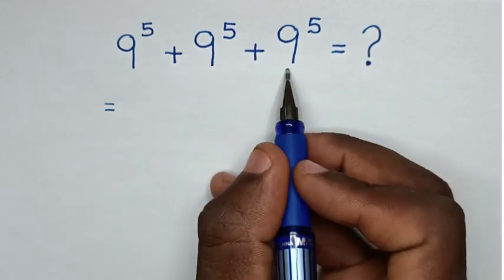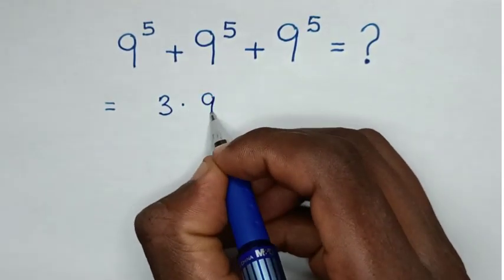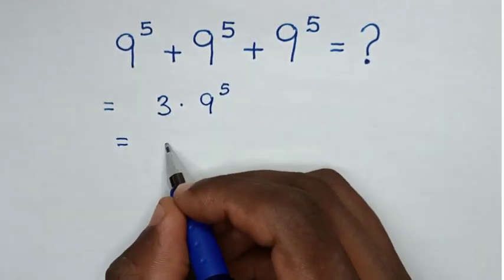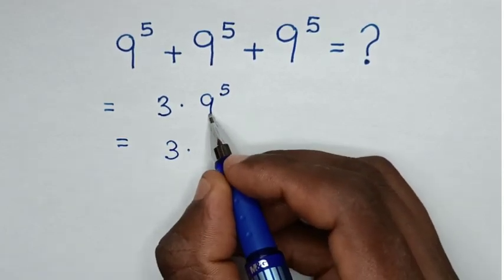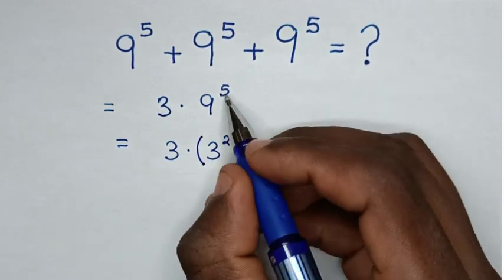In here there are three 9 to the power of 5, so it will be 3 times 9 to the power of 5. Then it will be equal to 3 times 9, which is the same as 3 squared, then bracket power of 5.